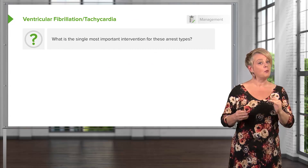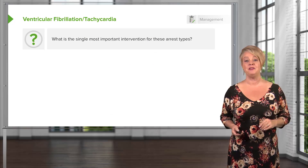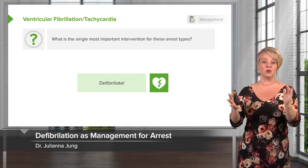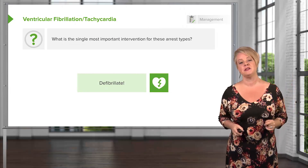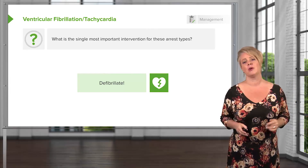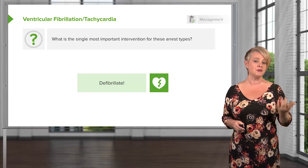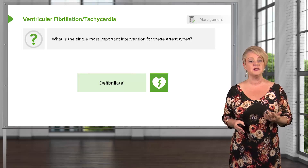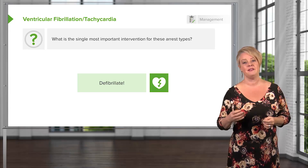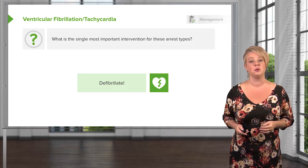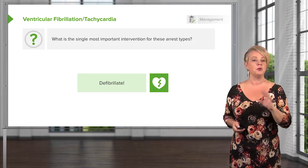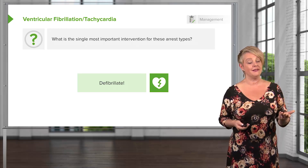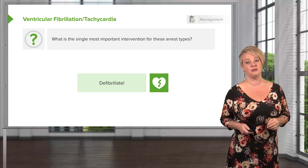The single most important intervention for V-fib and V-tach is to defibrillate. Defibrillation is such an important intervention that we've started putting defibrillators in public places all over the world — in shopping malls, at sports stadiums, in the back seats of police cars — all kinds of places where first responders can access them easily and use them quickly to save lives when needed.